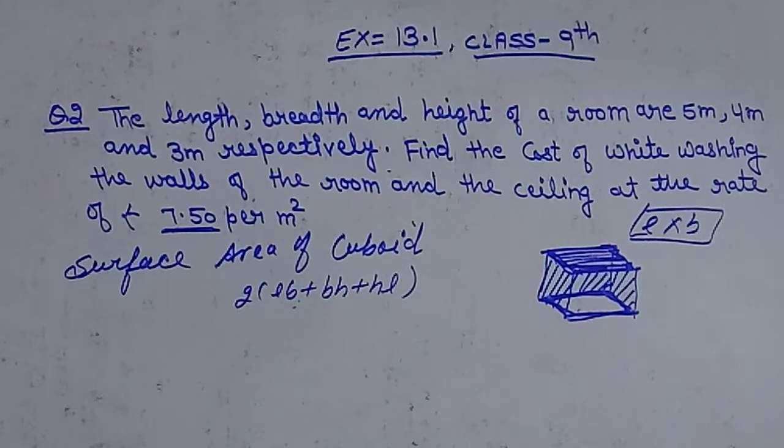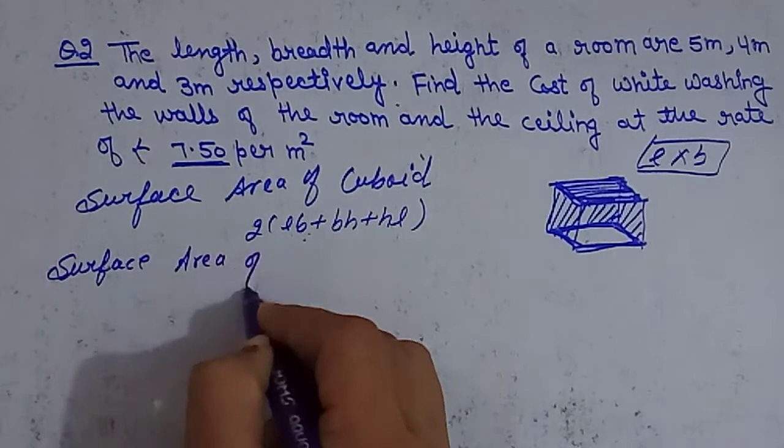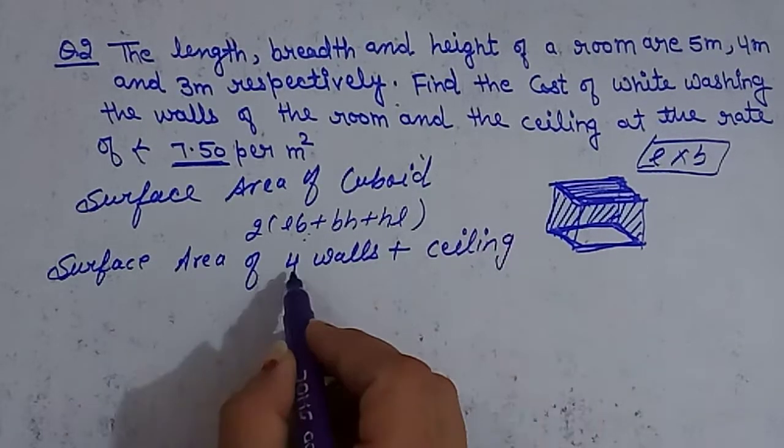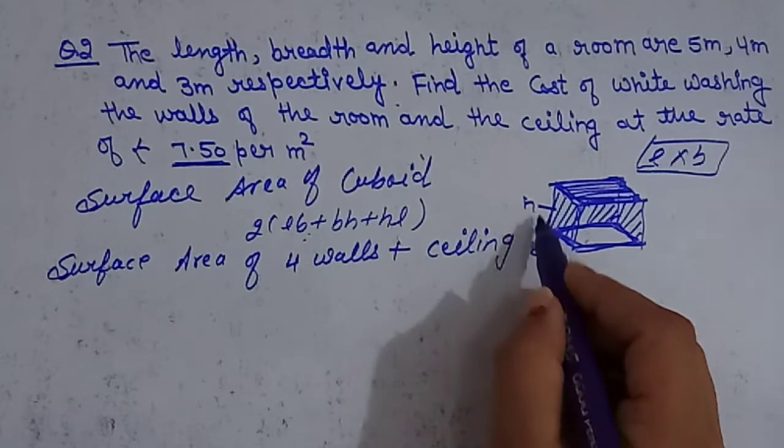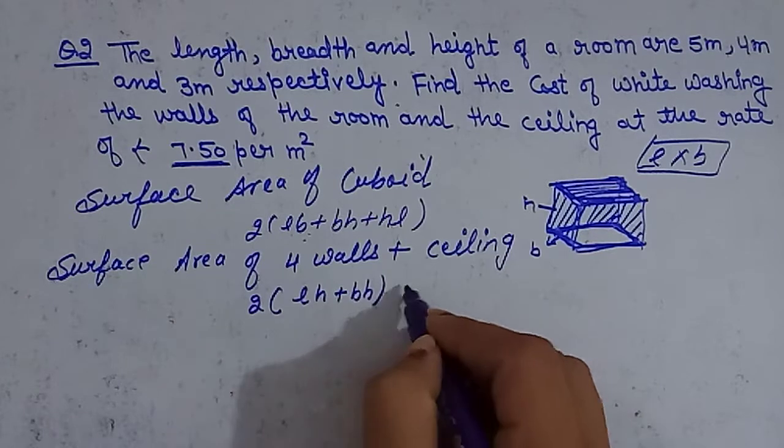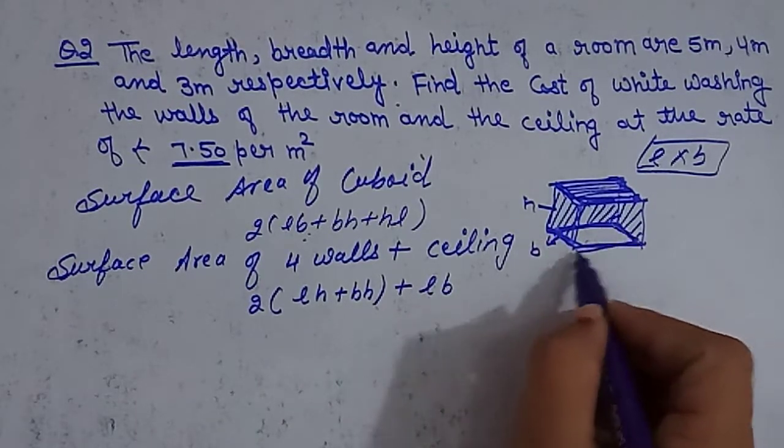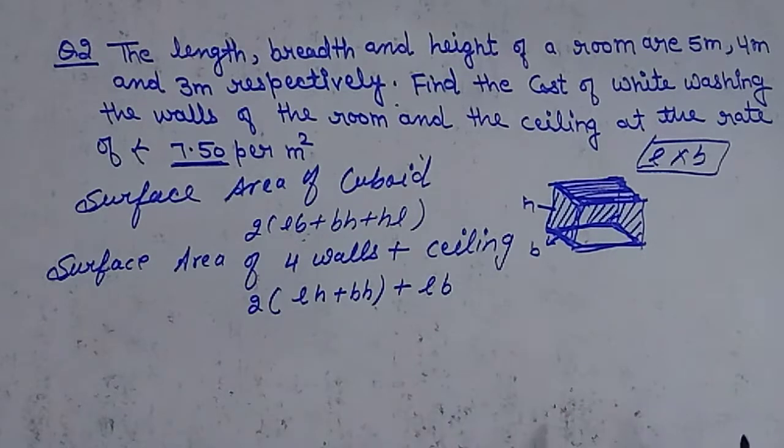Surface area of four walls plus ceiling. The formula is 2 into (lh + bh) plus lb. It's not twice lb, only single lb, because the bottom of the cuboid is excluded. The ground floor or ground base is excluded from the bottom of the cuboid, meaning you only have five faces instead of six faces.